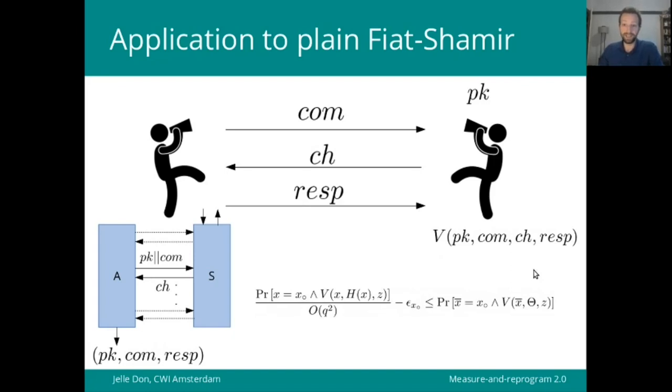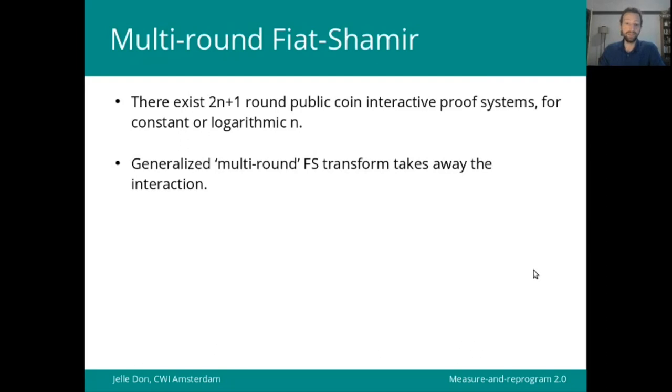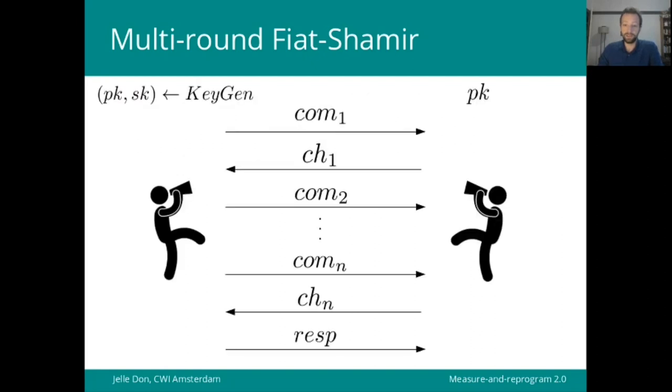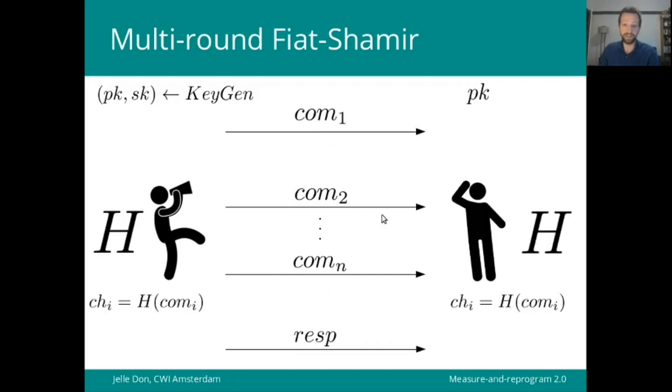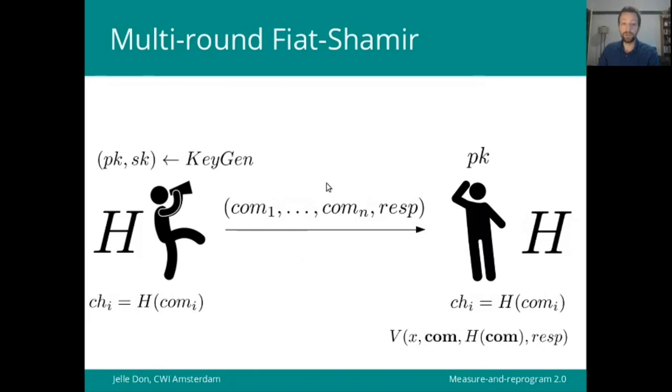But as I said, this is only plain Fiat-Shamir for three round schemes. The main topic of the current work is about multi-round Fiat-Shamir. Indeed, there exists many 2N plus 1 round public coin interactive proof systems for constant, but also logarithmic N, where we can again remove the interaction in a Fiat-Shamir heuristic way. We have an interactive scheme consisting of many rounds, and just as before, all these uniformly random challenges can be replaced by outputs of some public hash function, which the verifier can compute on its own. So that the prover only needs to send the N different commitments and a final response, and that's enough for the verifier to check the verification predicate.